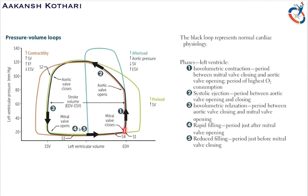During systole, the left ventricular pressure increases without any change in the volume of the left ventricle. This is called isovolumetric contraction — the volume remains the same. The mitral valve closes at the start of isovolumetric contraction, and hence we hear S1, the first heart sound.